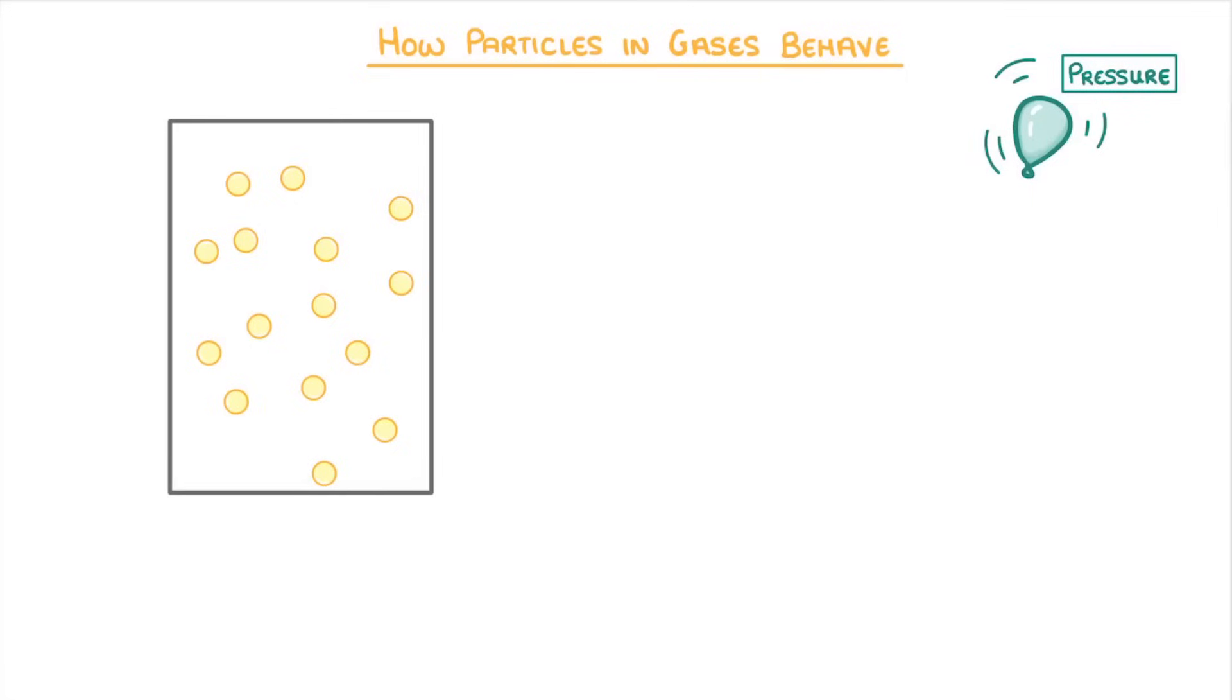If we had a container full of gas particles, the particles would be free to move about in completely random directions, and whenever they hit a wall, they would rebound and carry on in a different direction.